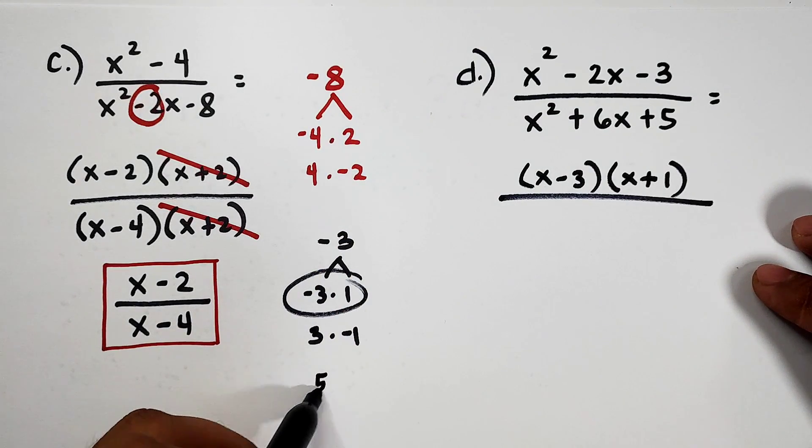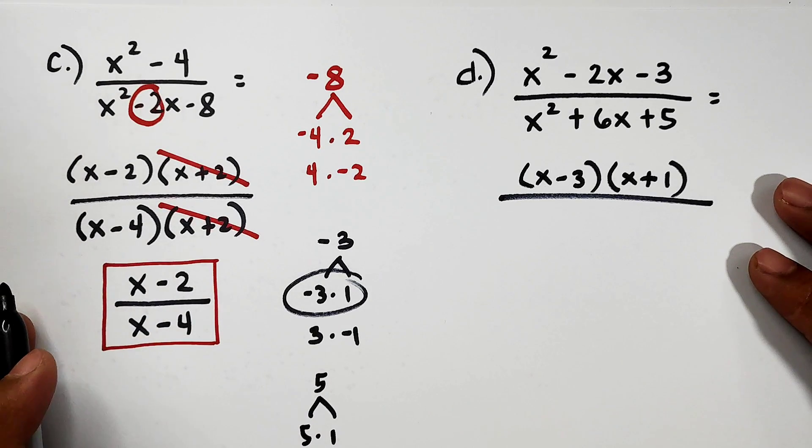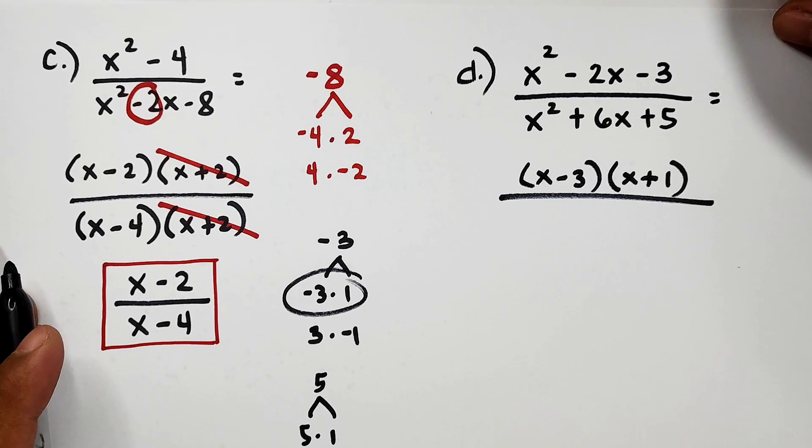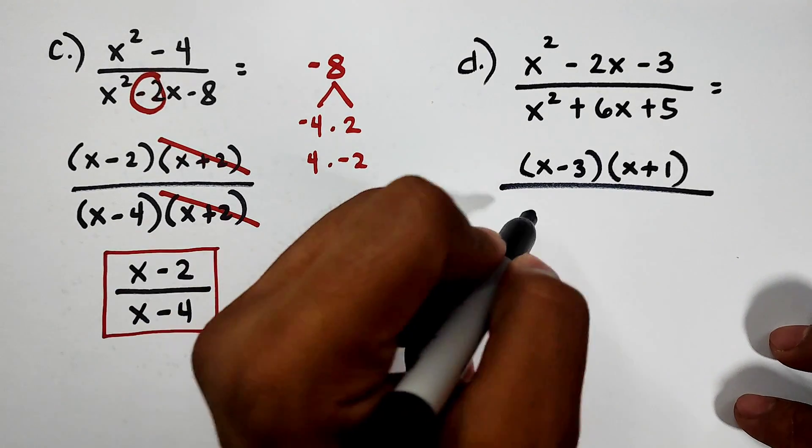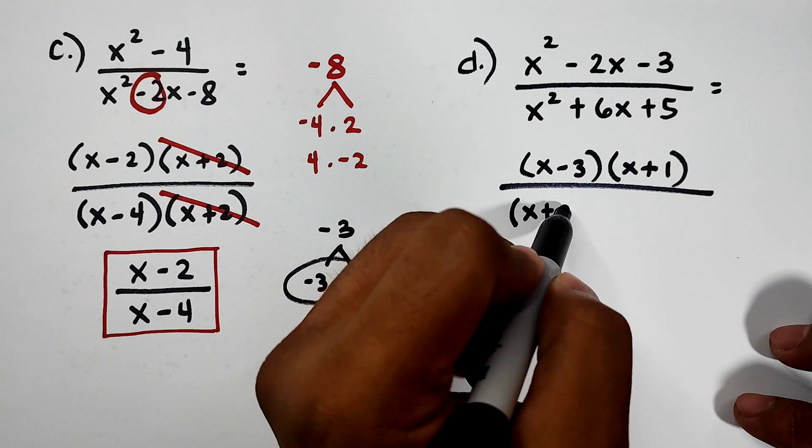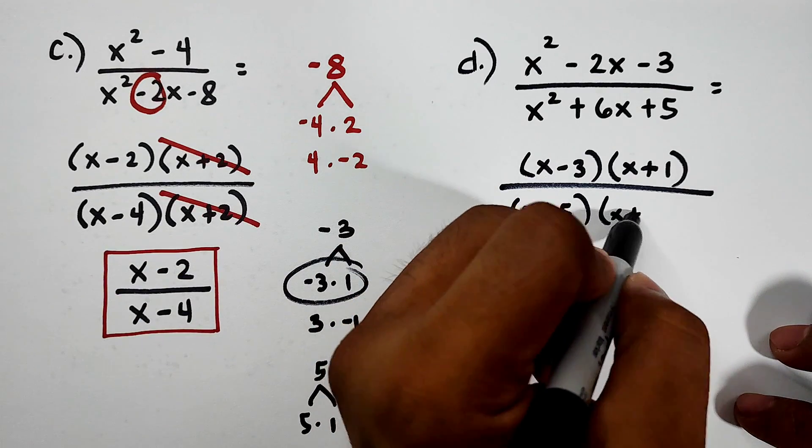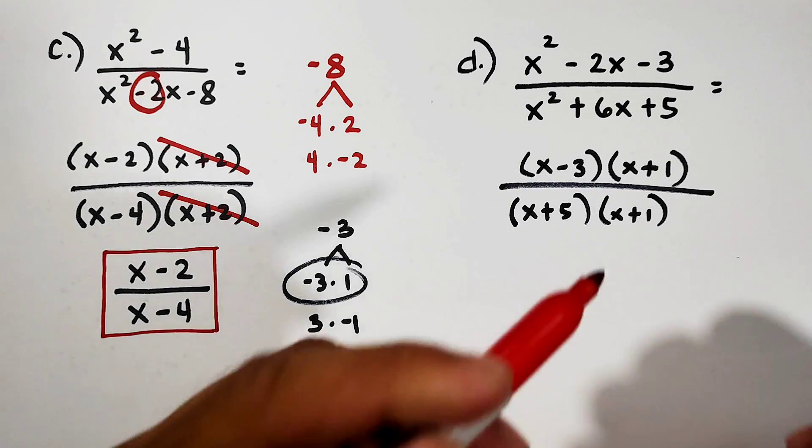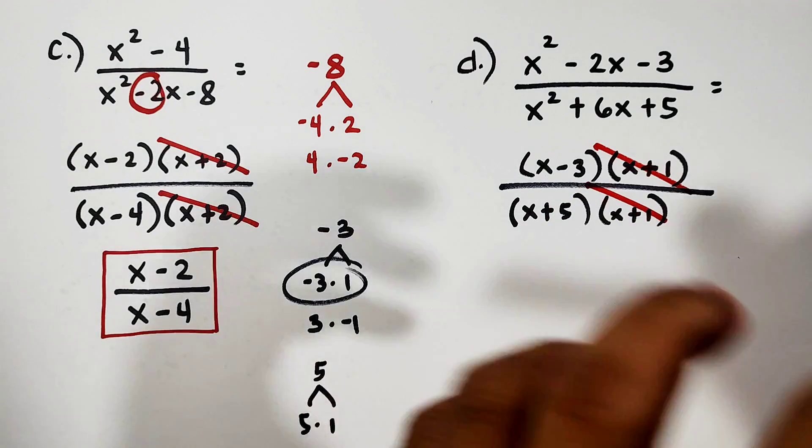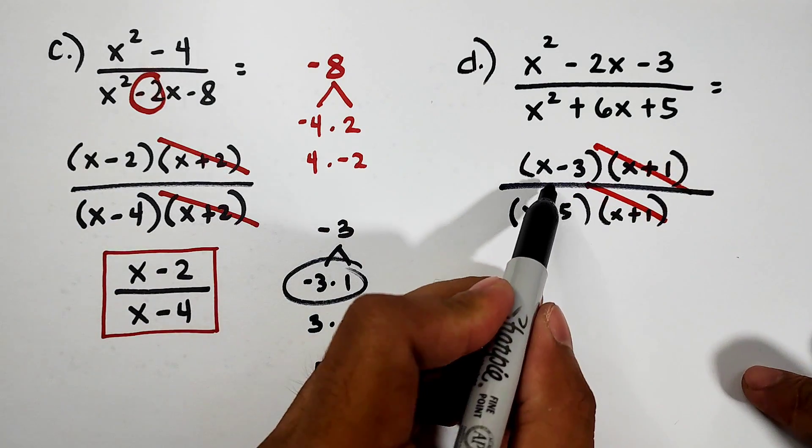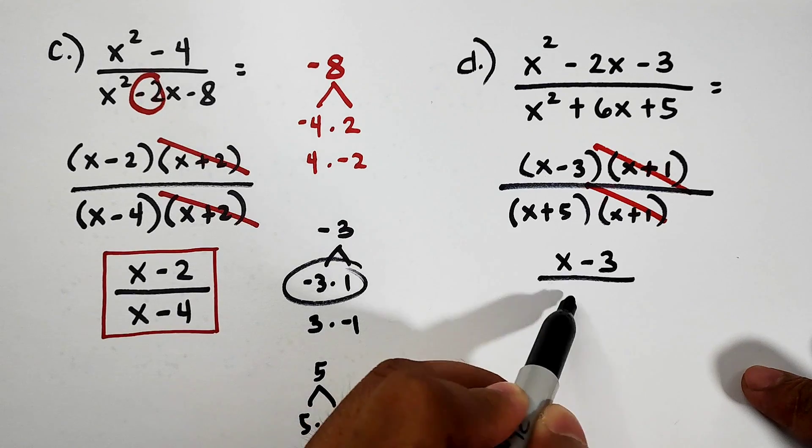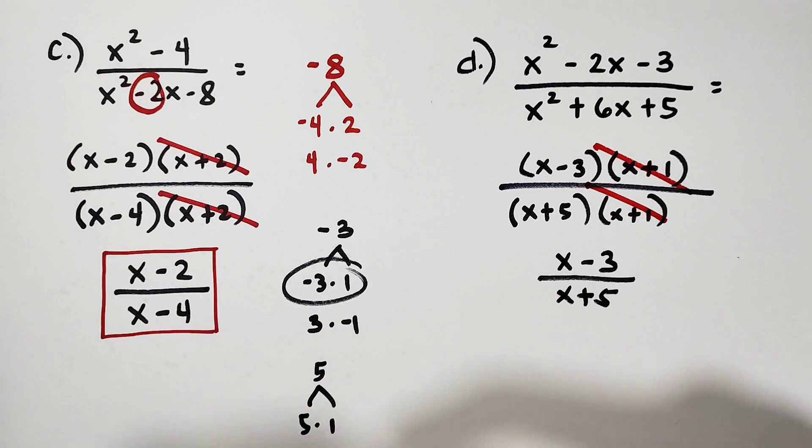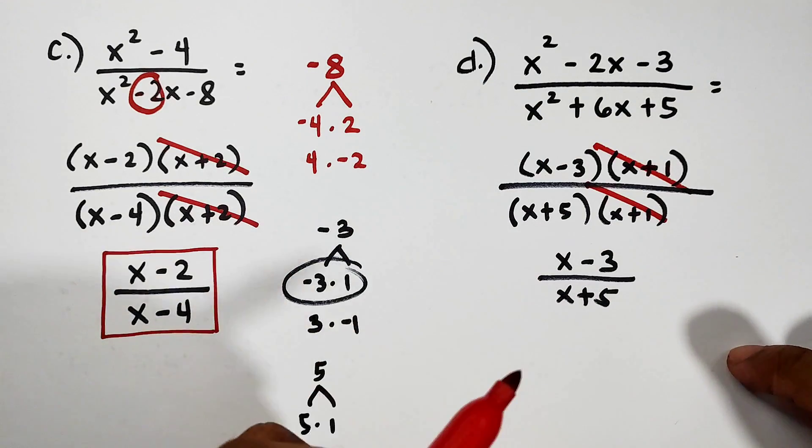Factors of 5 that will give you 6 is 5 times 1. Meaning the factors are (x + 5)(x + 1). You can see which factor can be eliminated. We can eliminate x + 1. And what will remain here is (x - 3) over (x + 5). This is now the simplified form of letter D, which is the given x² - 2x - 3 over x² + 6x + 5. And that's it, guys.